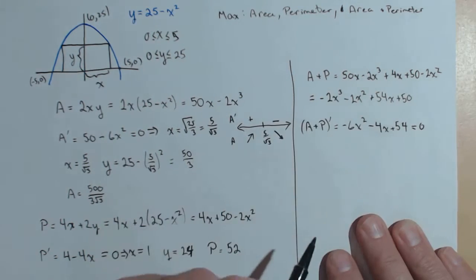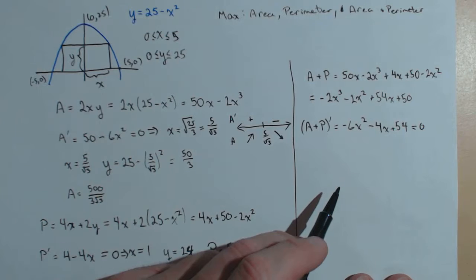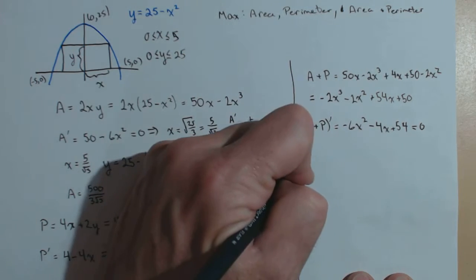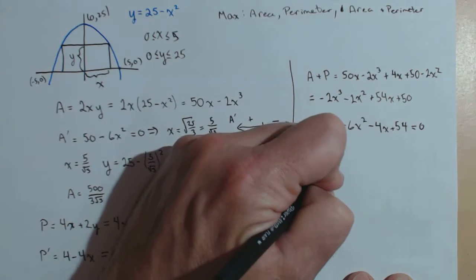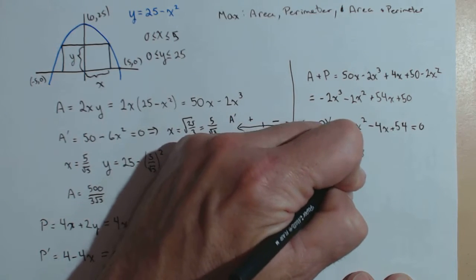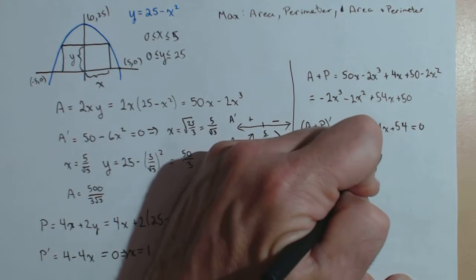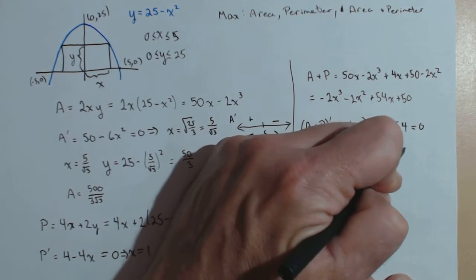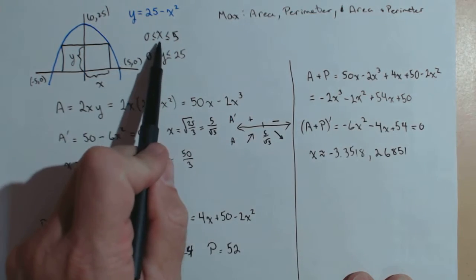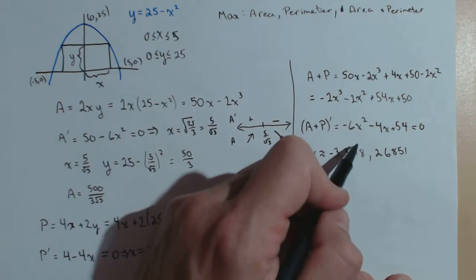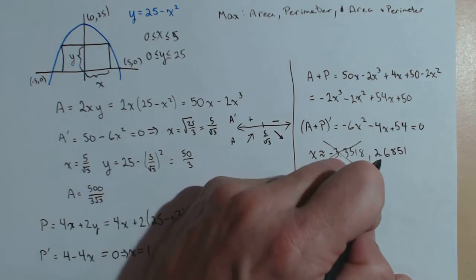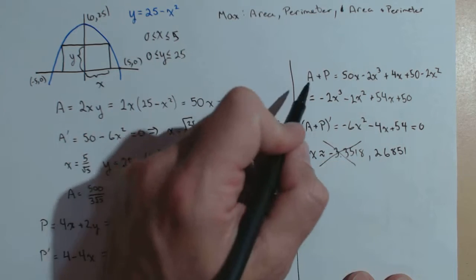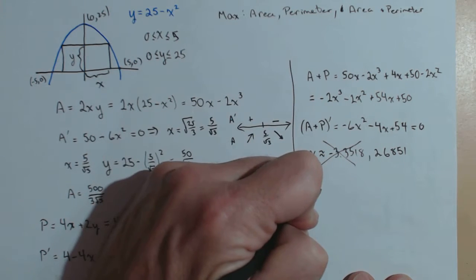We're going to set that to 0, and probably the easiest thing to do is go ahead and just use the quadratic formula. Now, if you do that, you get two answers. One is negative 3.3518, approximately, and the other one is approximately 2.6851. Now, only one of these fits within our interval, so let's not worry about that one. So there's the x that's going to yield the maximum sum of area and perimeter, and the corresponding y.